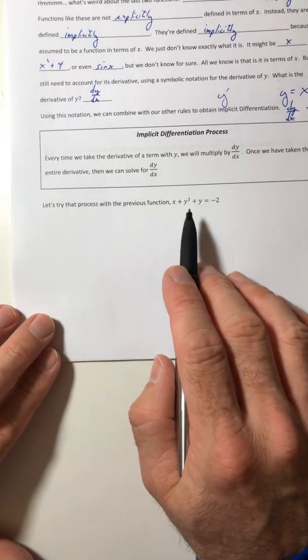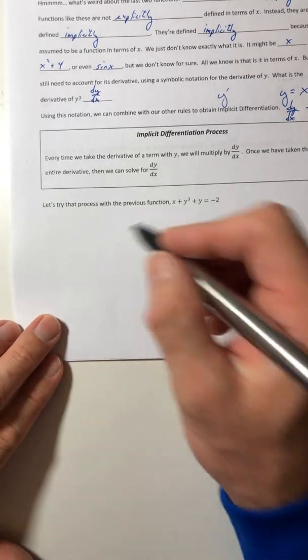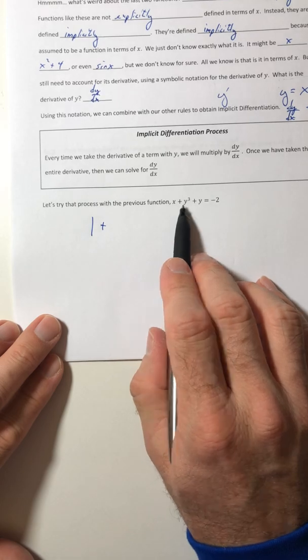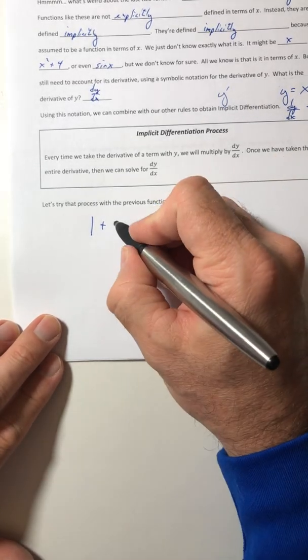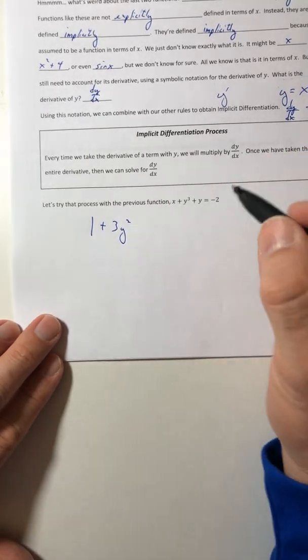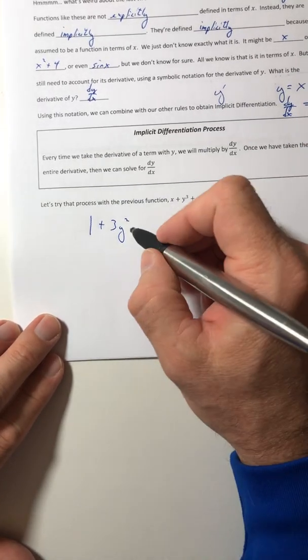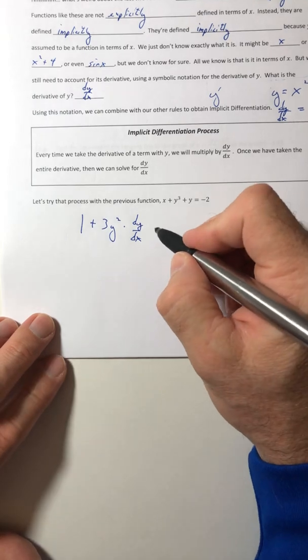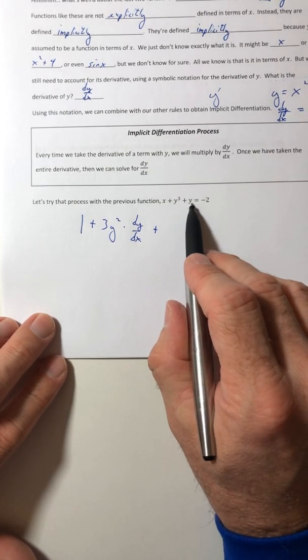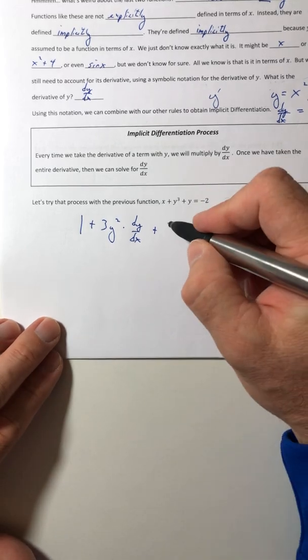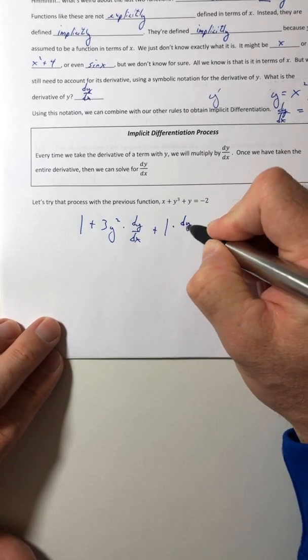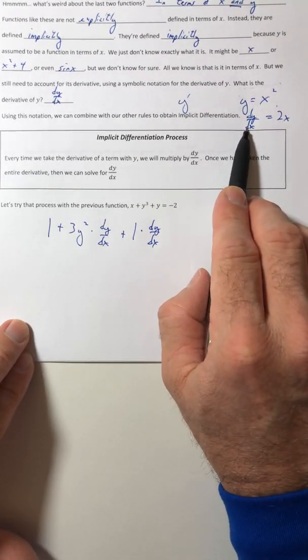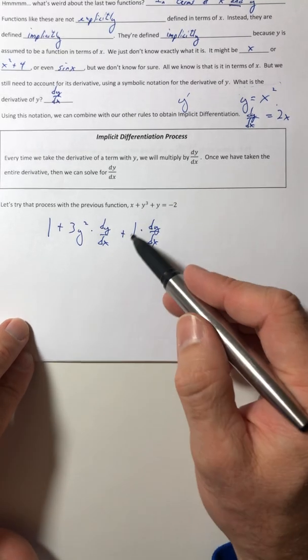So just go through it term by term. The derivative of x is 1 plus the derivative of y to the third. I'm just going to use the power rule. So pull the 3 down. But I just took the derivative of a y term. So now I need to multiply by dy dx. Okay, so then plus the derivative of the next term, the derivative of y is just 1 times dy dx, just like it was before. So same thing.